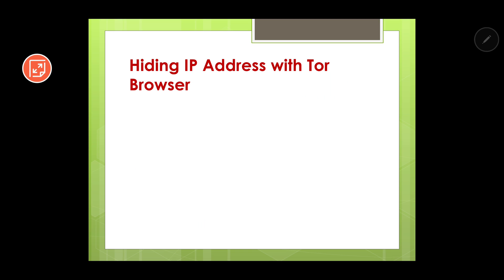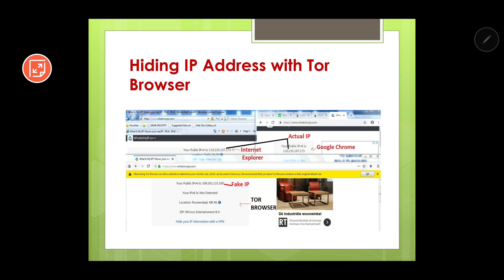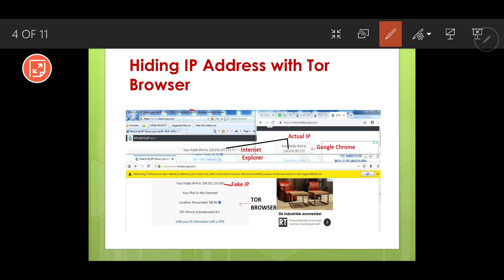Let me explain hiding your IP address with Tor browser. I checked my IP address using three browsers: Internet Explorer, Google Chrome, and Tor browser. In Internet Explorer, my IP address is 110.235.197.173, and I am getting the same IP address in Google Chrome. If you want to know how to check your IP address, there is a website called www.whatismyip.com — just enter that address in any web browser and you will get your IP address.